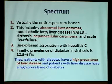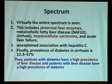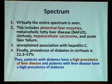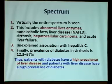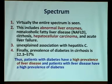The entire spectrum of liver disease is seen in diabetic patients. The most common abnormality is enzyme elevation — abnormal liver enzymes — followed by non-alcoholic fatty liver disease, cirrhosis, hepatocellular carcinoma, and acute liver cell failure. There is also an unexplained increased incidence of hepatitis C in diabetes. Prevalence of diabetes in cirrhosis is around 4.8 to 57%. Thus, patients with diabetes have a high prevalence of liver disease, and patients with liver disease have a high prevalence of diabetes.